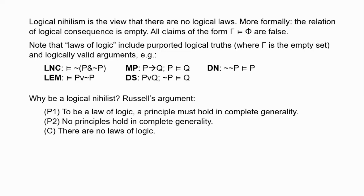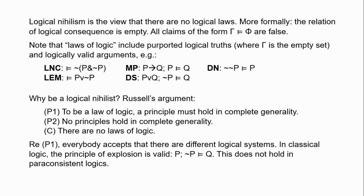Premise one: laws of logic must hold in complete generality. This was almost universally accepted until fairly recently — not a particularly controversial assumption. Everyone accepts that there are different logical systems and different laws will hold in each. In classical logic, for example, ex falso quodlibet, or the principle of explosion, is valid — this tells us that from a contradiction everything follows. Paraconsistent logics reject explosion. Similarly, disjunctive syllogism is valid in classical logic but not in paraconsistent logics. The law of excluded middle is a logical truth of classical logic but is rejected by intuitionistic logics.